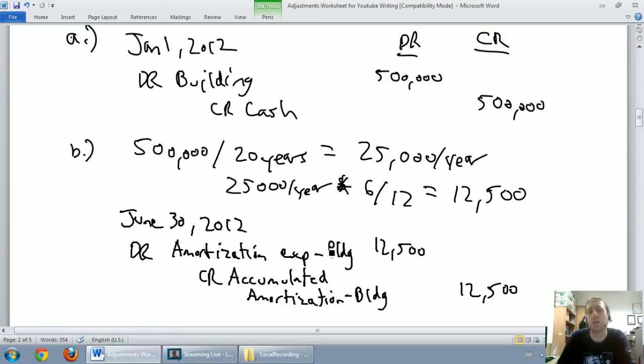Debits do indeed still equal credits. Now, a lot of times, students get this wrong in my class. They go, debit amortization expense building, and then they just credit the building directly. That's not the way we do this adjusting journal entry. You'll just have to remember, always for amortization expense, the journal entry looks identical. Debit amortization expense, credit accumulated amortization of whatever it is you're amortizing. It could be a building, equipment, a car, it doesn't matter. Always the same journal entry. Every single adjusting journal entry for amortization needs to look this way. Debit amortization expense, credit accumulated amortization. Again, if your text calls it depreciation, you'll say debit depreciation expense, credit accumulated depreciation. That's fine as well.